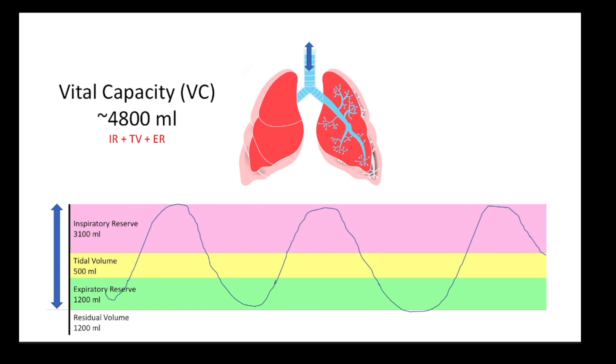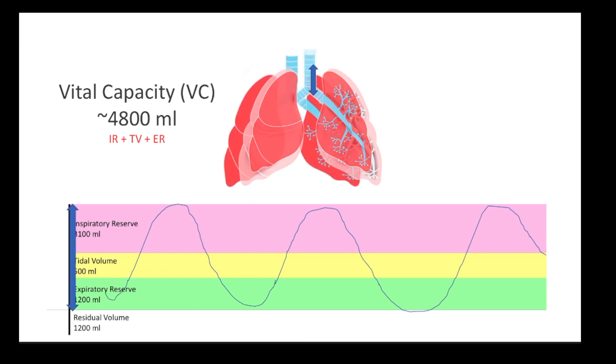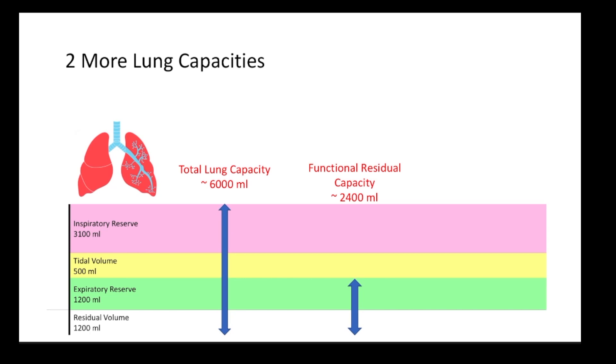Now the last two capacities we're going to look at is the total lung capacity, that is the sum of all four volumes. It's the total amount of air that your lungs can hold. And the second is the functional residual capacity, that is the volume of air that remains in your lungs at end expiration.